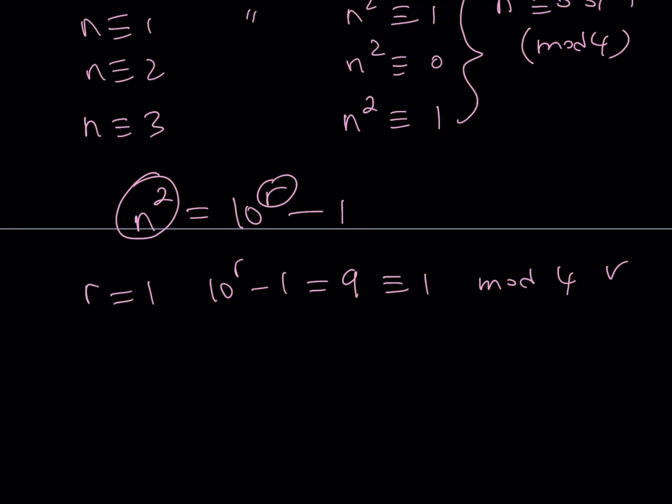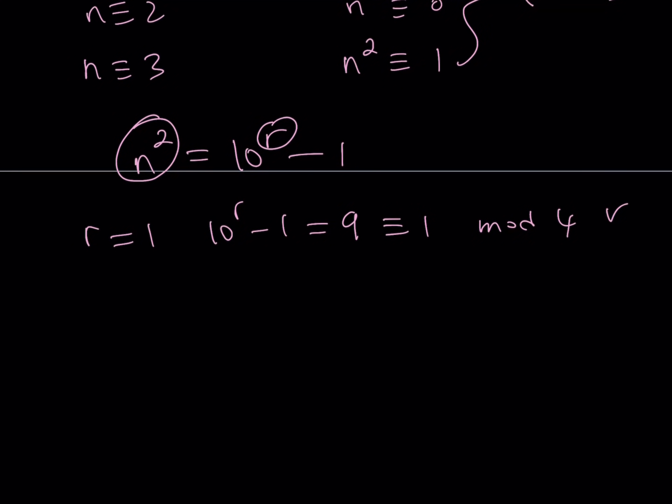But if r is greater or equal to two, for example, if r is equal to two, let's take a look at that case, for example, you're going to be getting 99 from here. And 99 is not divisible by four, it leaves a remainder of three because 96 is divisible. So you get a three. So this is going to repeat for any number greater than two, it is going to be the case.